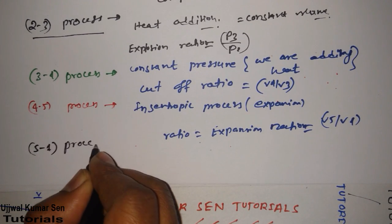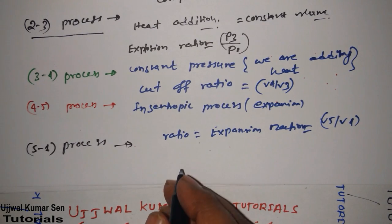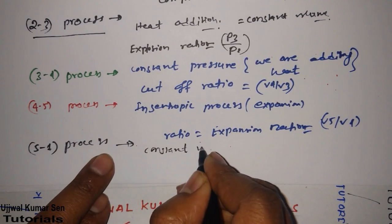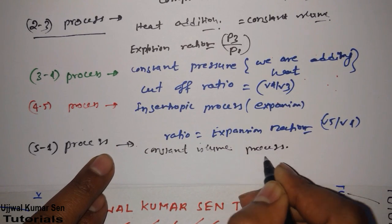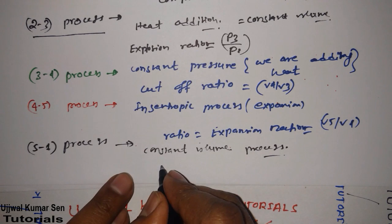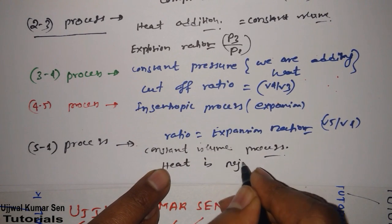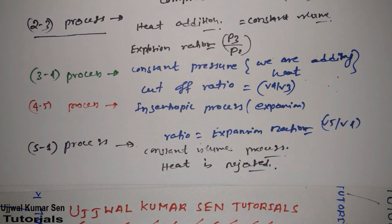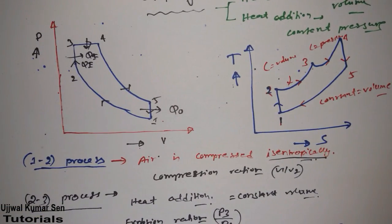For the last process, 5→1: this is a constant volume process, and in this process heat is being rejected. That covers all five processes of the dual cycle. Now let's go for the derivation of thermal efficiency.